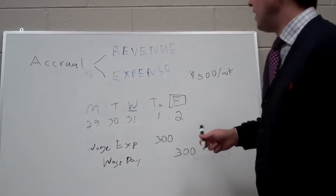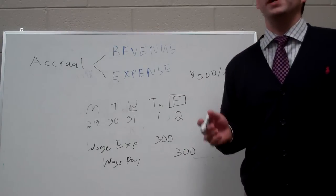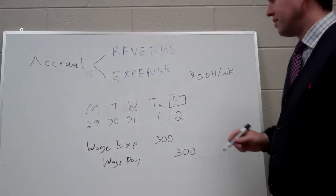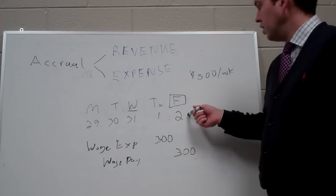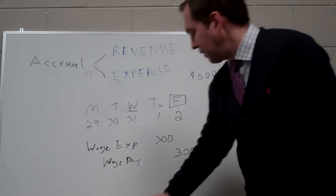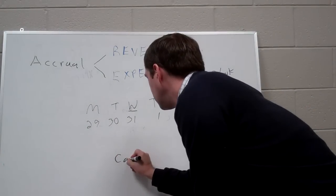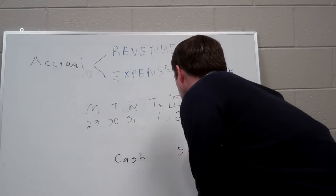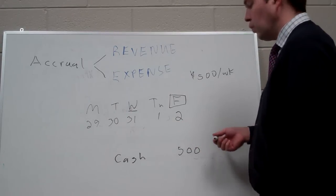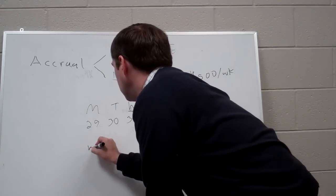And we're going to credit the liability wages payable for $300, because even though we haven't paid the employees for working through these three days yet, and we won't pay them till Friday, we owe them the money. We've incurred the expense, so we have to accrue this wage expense and get it on the books. Now, when Friday comes along, and it's pay day, we've got to pay our employees. And we have to pay them the whole thing. We have to pay them all $500, so we're going to credit cash for $500. Now, we had a liability on the books of $300, wages payable. When we pay them the $300, we can take that liability off the books.